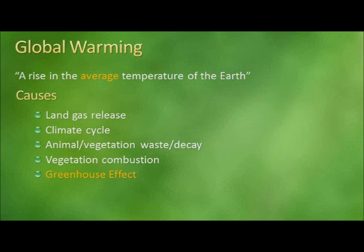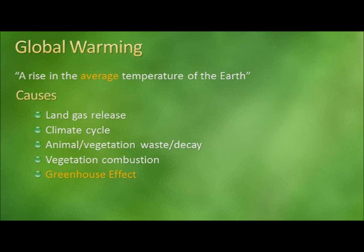Causes of global warming vary as well. Global warming can be caused by the release of gases from the Earth, which go into the atmosphere and contribute to the greenhouse effect, which we'll discuss in a moment. The Earth also has a natural climate cycle that occurs over many thousands of years. Animal and vegetation waste and decay also contribute to global warming, since there is a release of greenhouse gases upon the decay of these materials. Vegetation combustion, or in layman's terms, forest fires, also release large amounts of carbon dioxide into the atmosphere.